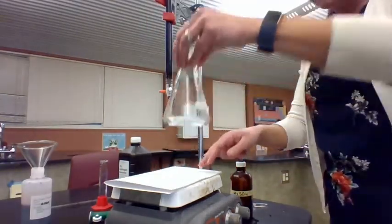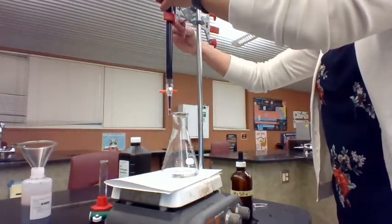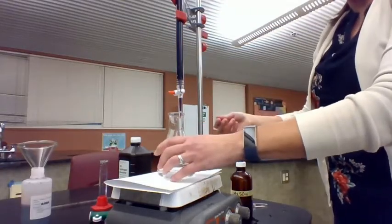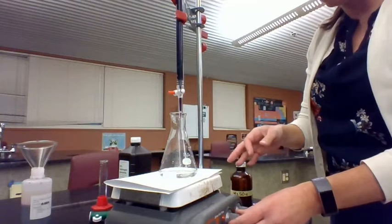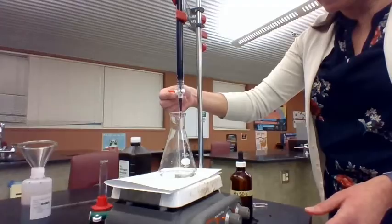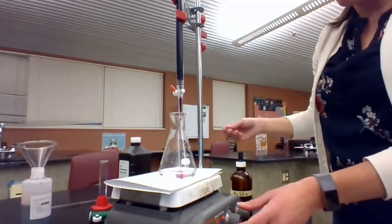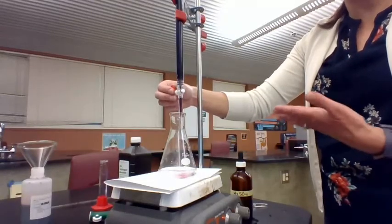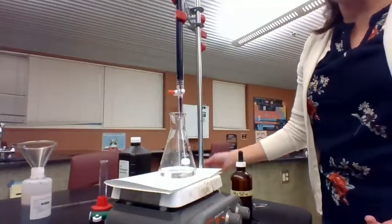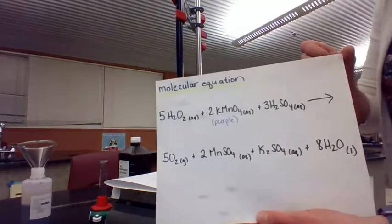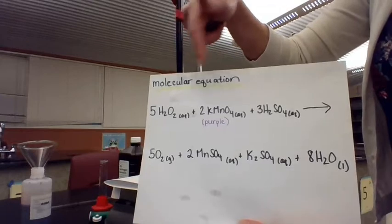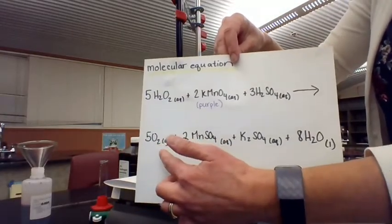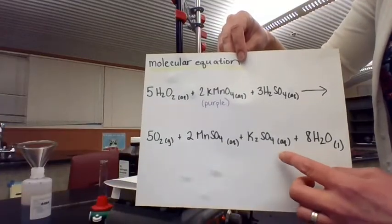Notice how this solution in the flask is clear, and then over here in my burette I have this bright purple solution. When we add our purple potassium permanganate to the solution in the flask, you see how the purple disappears? When my purple solution hits the flask solution, it turns clear. The reaction is: purple potassium permanganate is added to a solution containing hydrogen peroxide and sulfuric acid, and when they react they make oxygen gas — which may fizz a little — some manganese sulfate, some potassium sulfate, and liquid water.